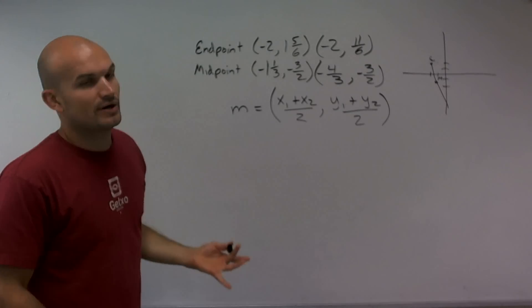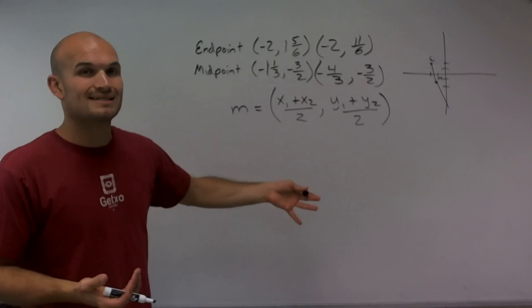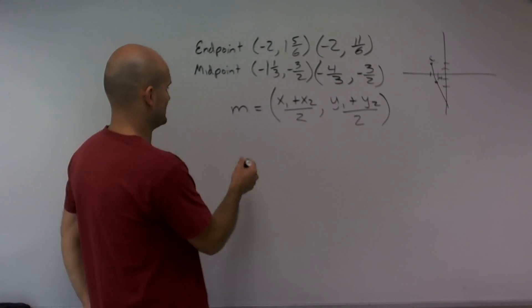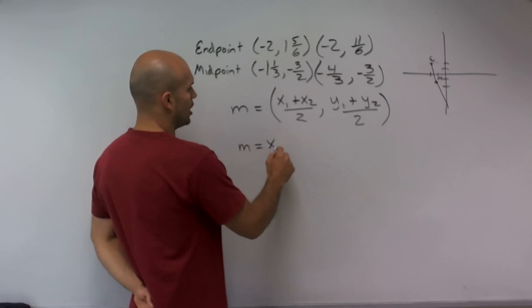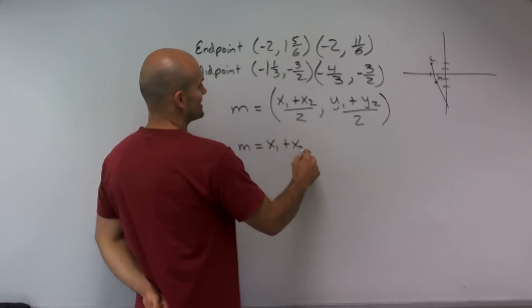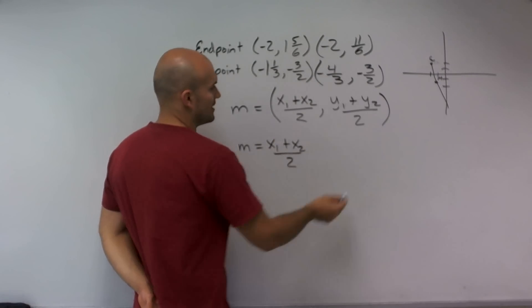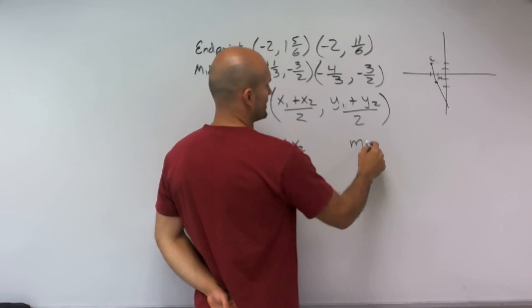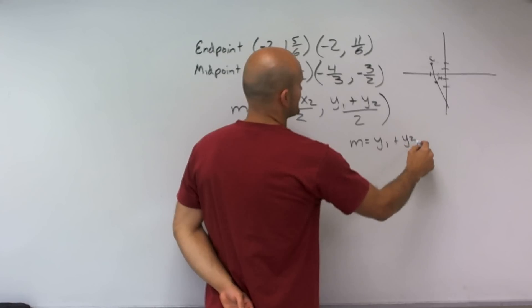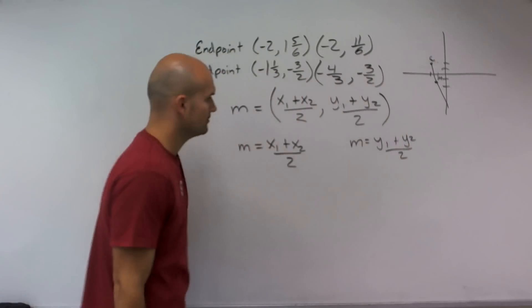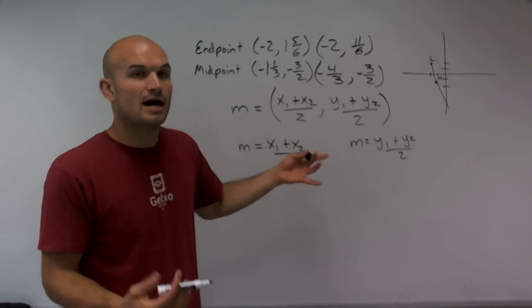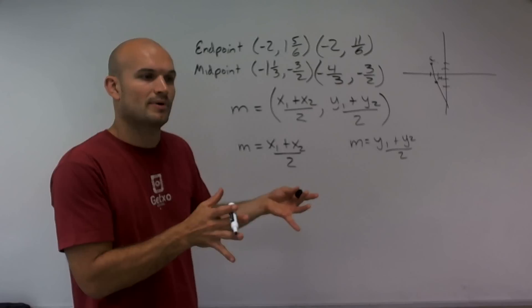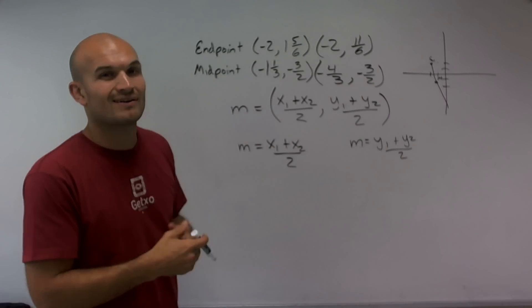So what I'm going to do is create a formula, and rather than doing both points at the same time, I'm going to separate this. I'm going to say the midpoint of the x coordinates is x1 plus x2 divided by 2, and the midpoint of the y coordinates is y1 plus y2 divided by 2. So I'm just splitting this up into two different equations.